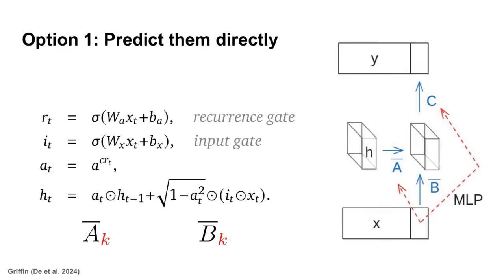The first option is perhaps the most straightforward. We're going to define a functional form that allows us to directly predict A-bar, B-bar, and C, just as if they were other components in a neural network. In this representation, which is used in the model known as Griffin, we're going to produce a recurrent and input gate by running a standard neural network over x_T.